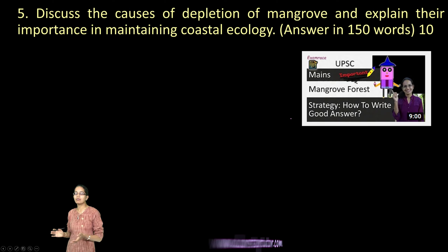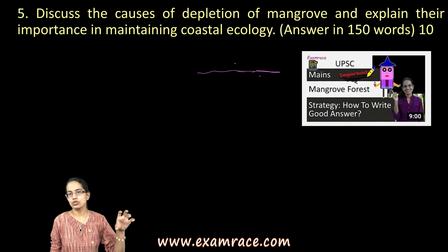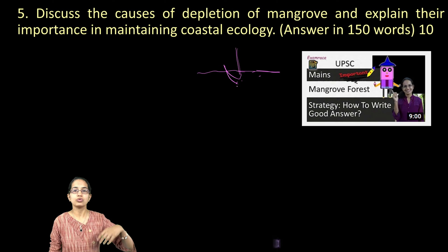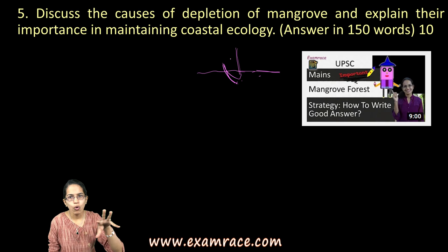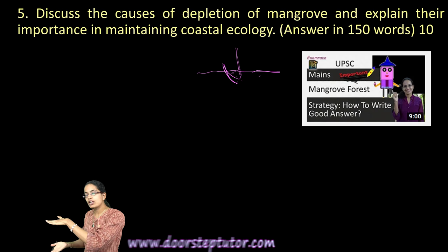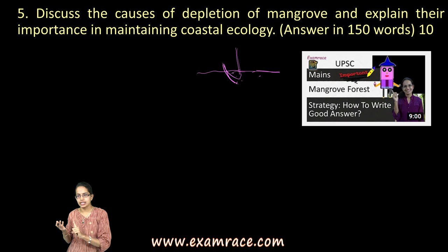The next question covers the causes of mangrove depletion and their importance in maintaining coastal ecology. Mangroves are found in regions with shallow waters and cover nearly two lakh square kilometers. They have pneumatophores, also called aerial roots, which emerge from the soil to absorb oxygen. Mangroves prevent silt from entering the ocean, ensuring sediment levels don't rise and sea levels don't increase rapidly.